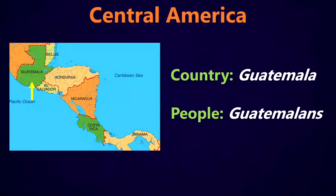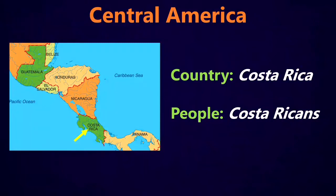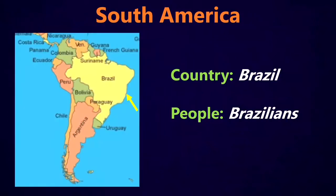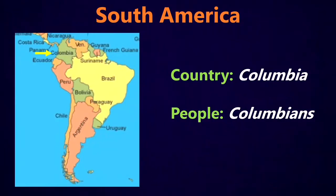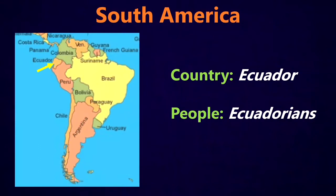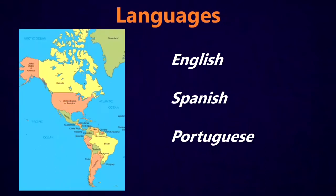If we go a little bit south into Central America, we've got Guatemala and the people are Guatemalans. We've got Costa Rica and the people are Costa Ricans. And in South America, we've got Brazil and the people are Brazilians. Colombia, the people are Colombians. Ecuador, the people are Ecuadorians. And if we look at the languages, we've got three main languages in North and South America: English, Spanish, and Portuguese. Portuguese is the main language in Brazil.